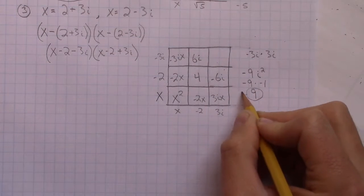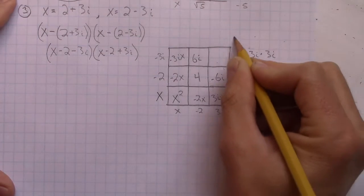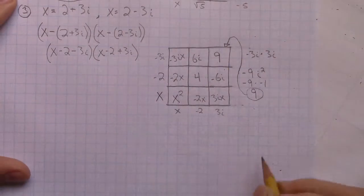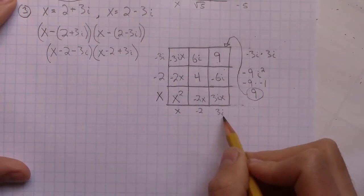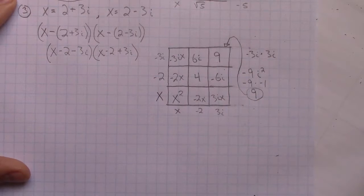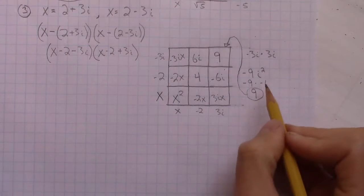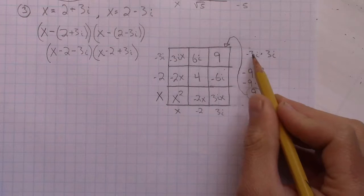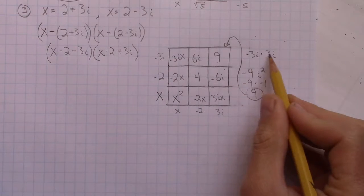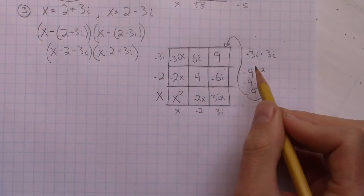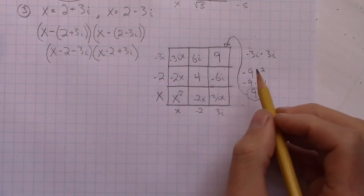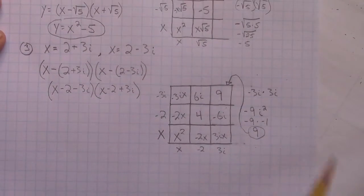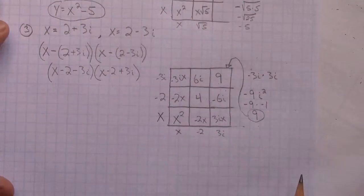So 9 is what goes in that last cell, which might seem a little weird. Negative 3i times positive 3i equals 9 because the negative 1 from i squared cancels with the other negative, and we're left with 3 times 3. That's how that one works. Now, just like before, we add everything up together, and what's nice is things cancel out really nicely.